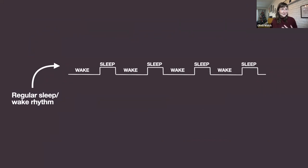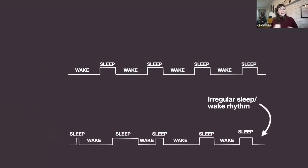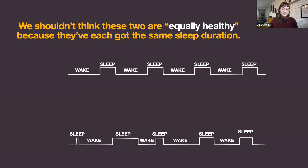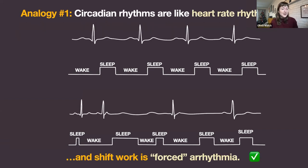Now imagine I showed you somebody's sleep-wake rhythm: very consistent, 16 hours awake, eight hours of sleep, same exact bedtime every day. Then another person sleeping very short sometimes, very long others — on average eight hours, but very inconsistent. We shouldn't think of these two patterns as equally healthy just because they have the same sleep duration. Rhythmicity really, really matters. Regularity really matters for sleep. So analogy one: circadian rhythms are like heart rate rhythms, and shift work is forced arrhythmia.